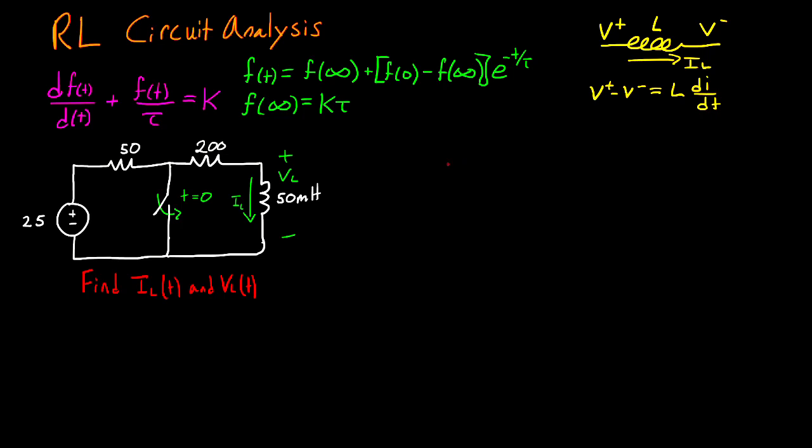We are going to be talking about how to solve RL circuits in the time domain. Starting off, the equation for an inductor is that the potential across it is equal to the inductance value multiplied by the derivative of the current.